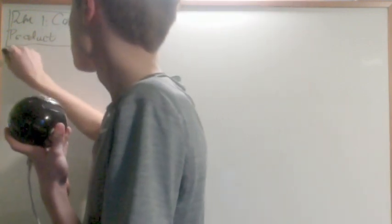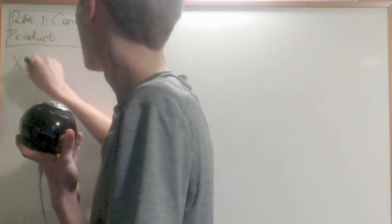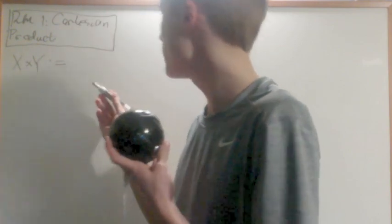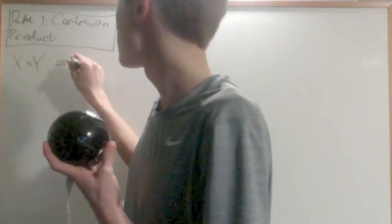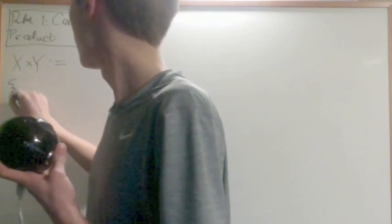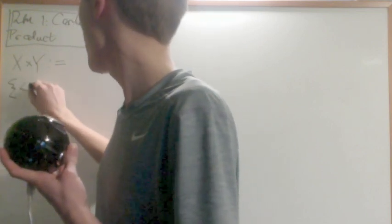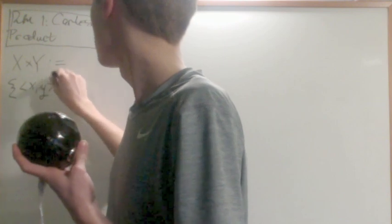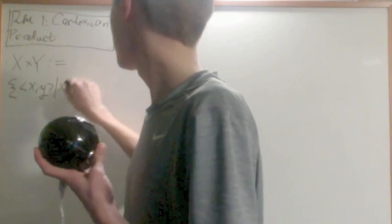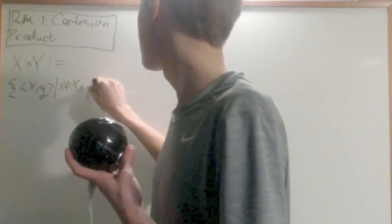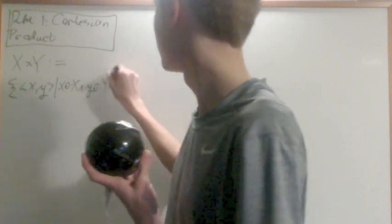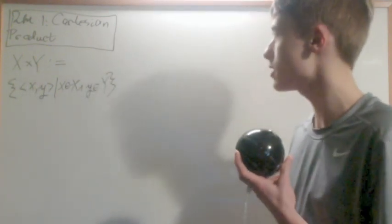What we do is say that X cross Y for two sets X and Y is going to be defined as the set of all pairs (x, y) such that x is in X and y is in Y. That's how we define the Cartesian product.